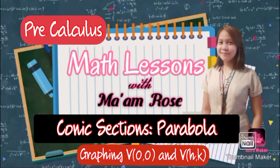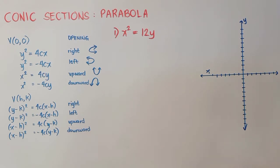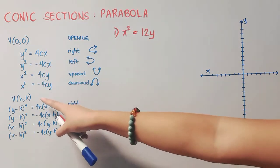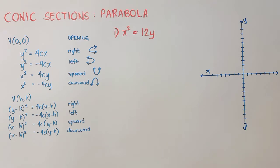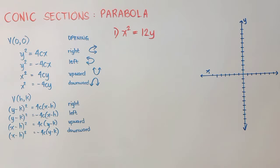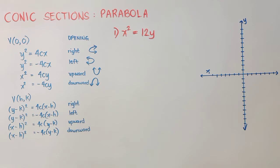In this video, we will learn how to graph parabola. In graphing parabola, there are two cases of our vertex. One is if it's in the origin — that's (0, 0) — and the other one is any point of the plane, that's (h, k). If our vertex is (0, 0), these are the following forms that we will see. On the other hand, if our vertex is (h, k), these are the forms that we will see.